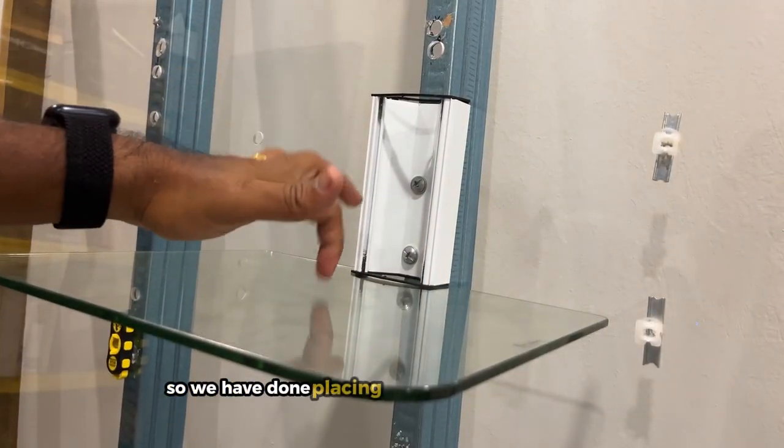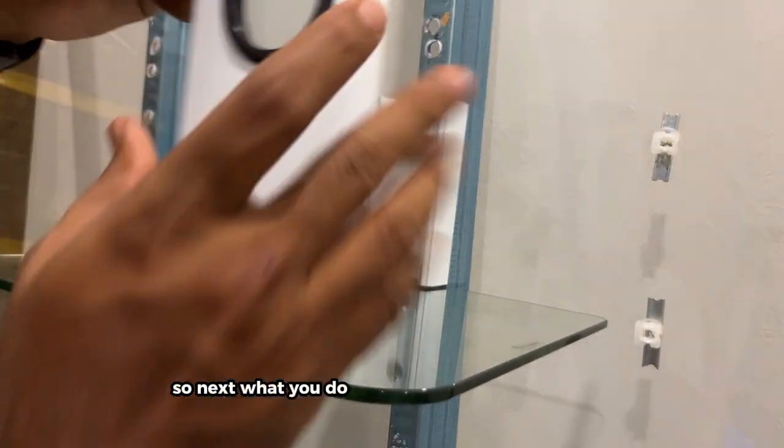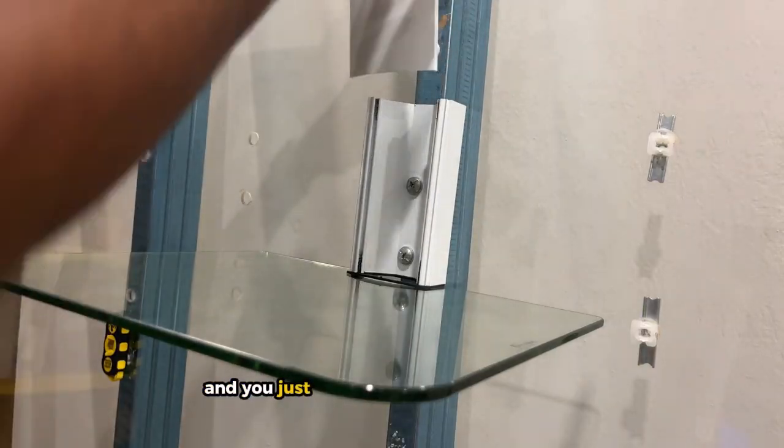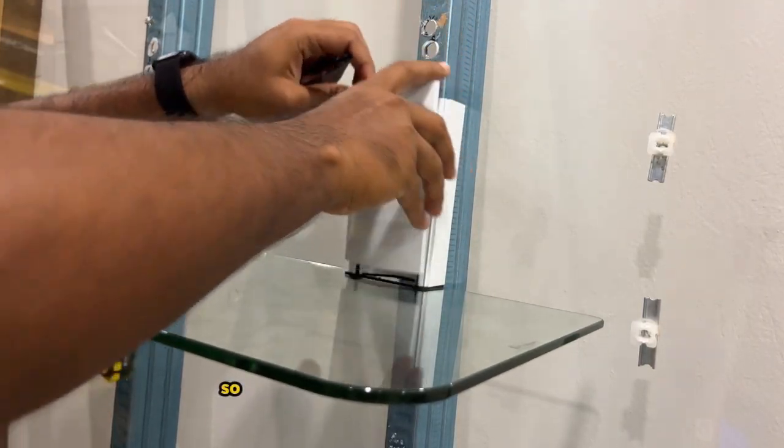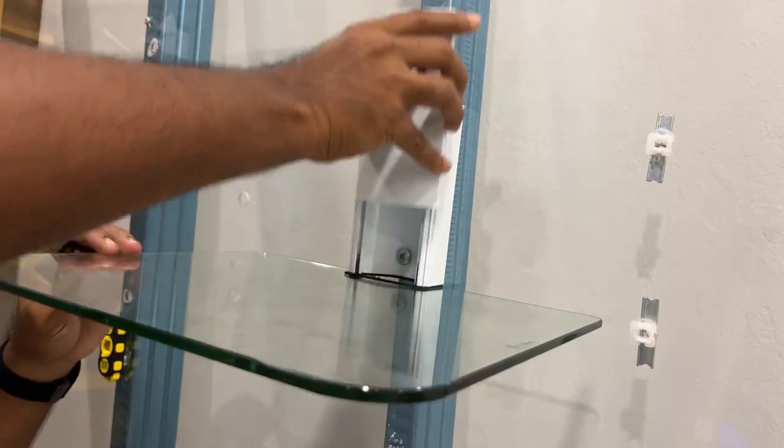We have done placing the bottom shelf right here. So next, what you do is take this unit right here and you just slide it in to the main wall unit. Condo Mounts is considerate enough to provide you this hole right here.